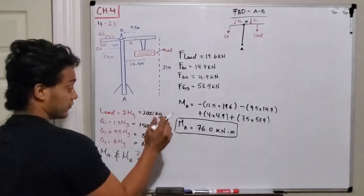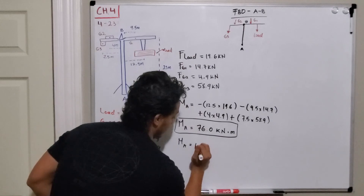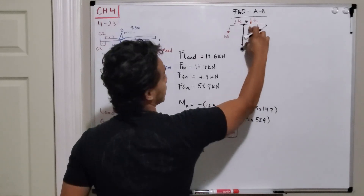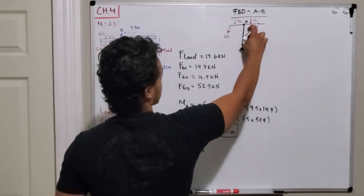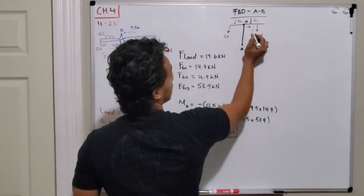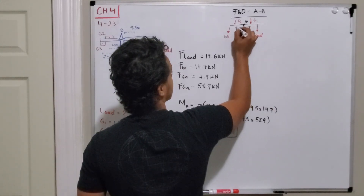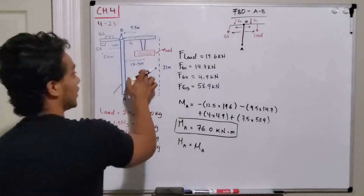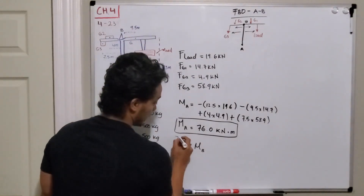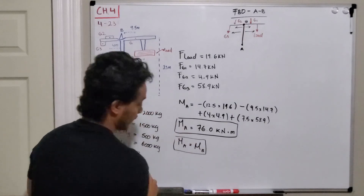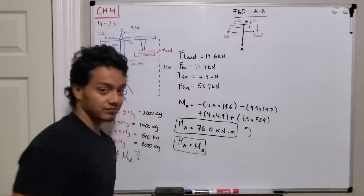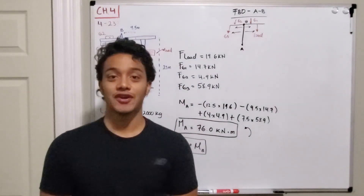The moment around A equals the moment around B because all the forces are in the y-direction and the difference between point A and point B is only in the y-direction. Every distance — for the load, G2, and G3 — is the same from both points. We never use the 23-meter difference between A and B, so moment around A equals moment around B. In our case it is a counterclockwise moment. Thanks for watching, see you in the next video!